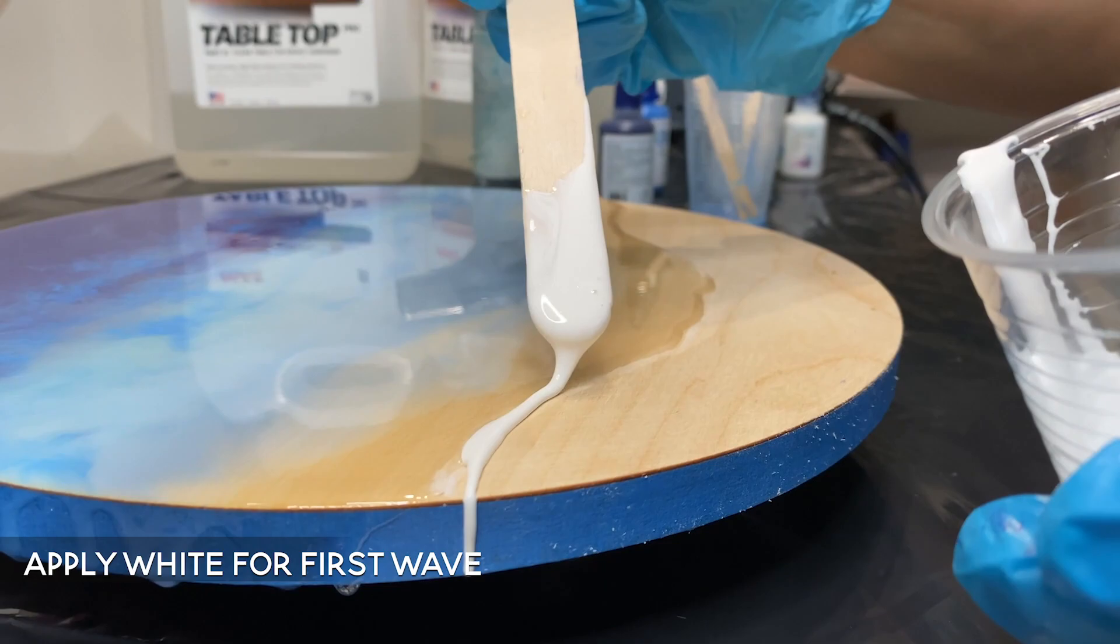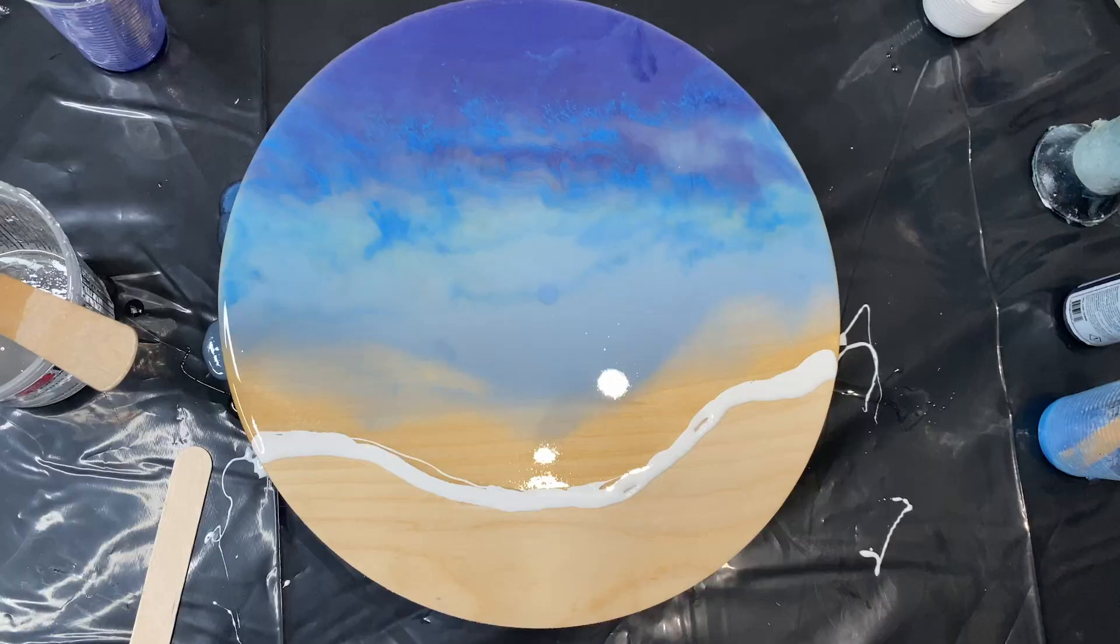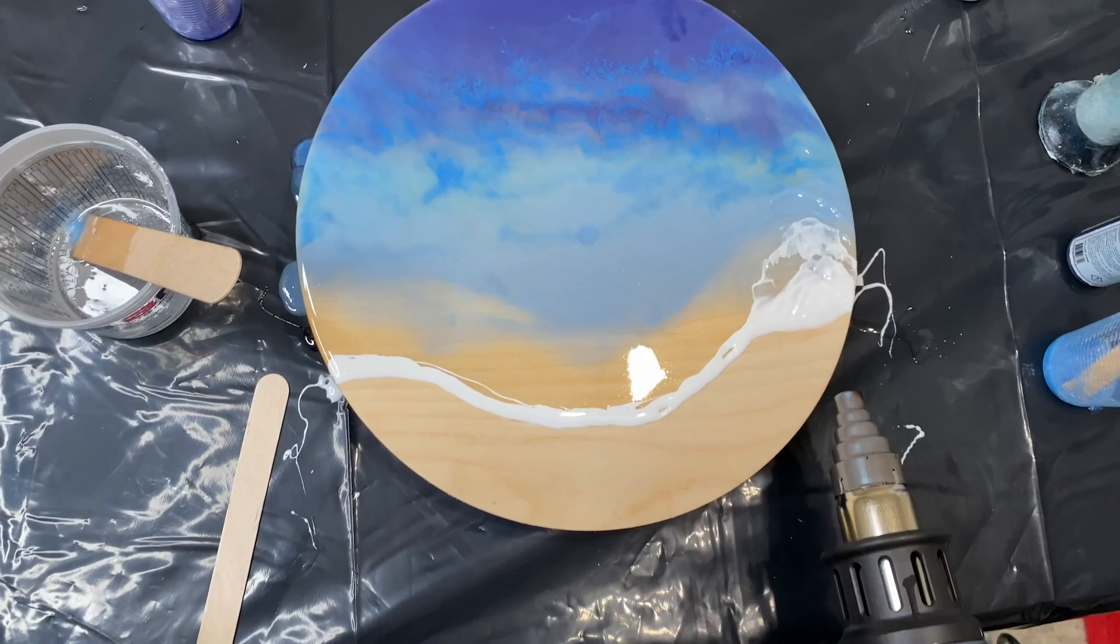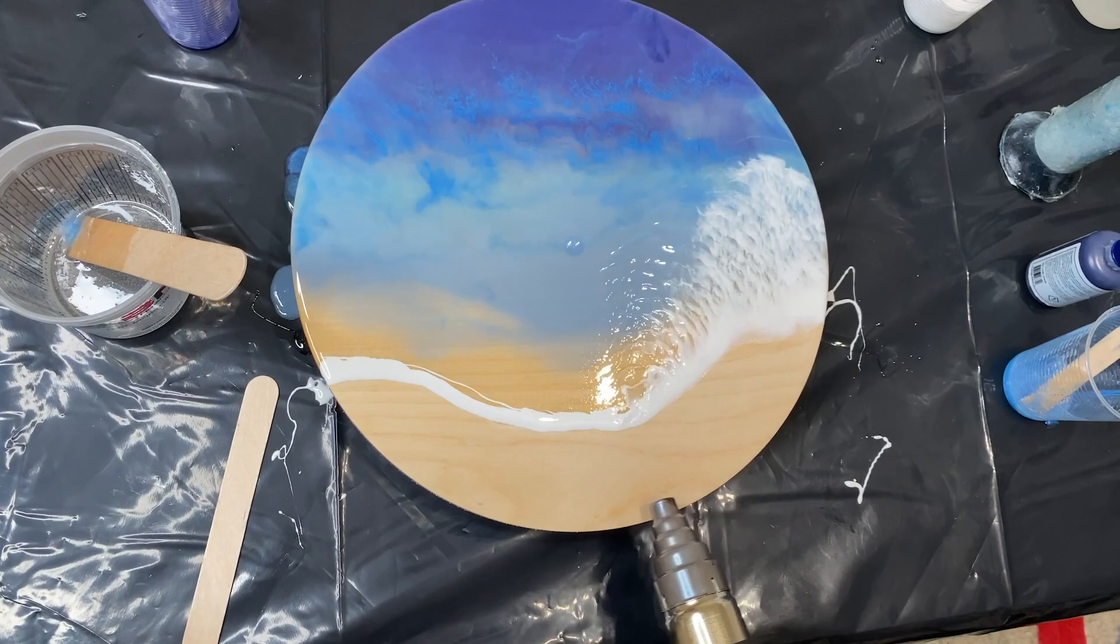Next is time for our first wave. For this one I decided to do a little bit thicker of a line because I wanted to push my wave all the way to the top of my piece, so I needed a little bit more pigment in order to do that.